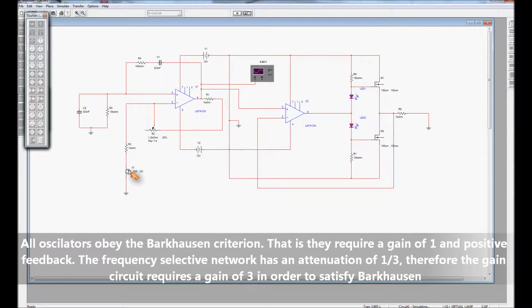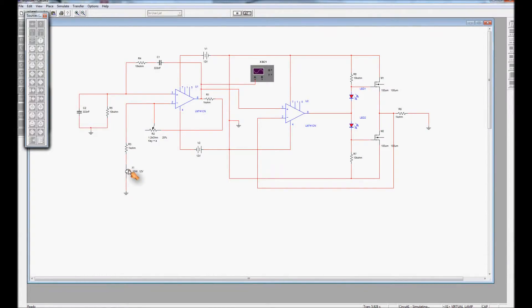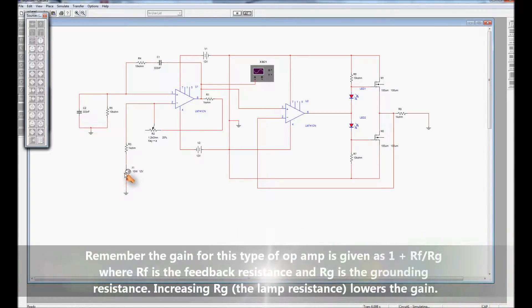The lamp filament will heat up. So if for example the gain increases a little bit we get more current flowing through this lamp filament here. And the lamp filament will heat up. As it heats up its resistance will increase and effectively lower the gain. So this lamp plays a very important part in the Wien bridge oscillator.